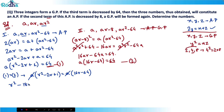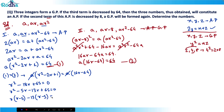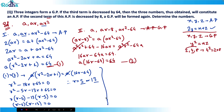Factorising r² − 18r + 65 = 0: we find 5 and 13 work, giving (r − 5)(r − 13) = 0. Therefore r = 5 or r = 13. Now we find the value of a for each case.